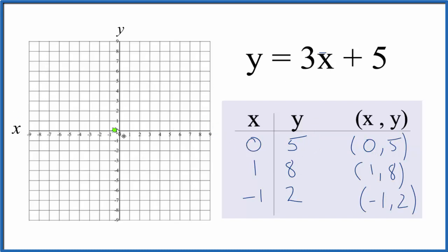So we go to x is 0, y is 5, x is 1, y is 8, over 1 and 8, and we could stop there and draw a line with two points, but it's good to have a third point. Make sure you did this part correctly. So x is negative 1 and y is 2.